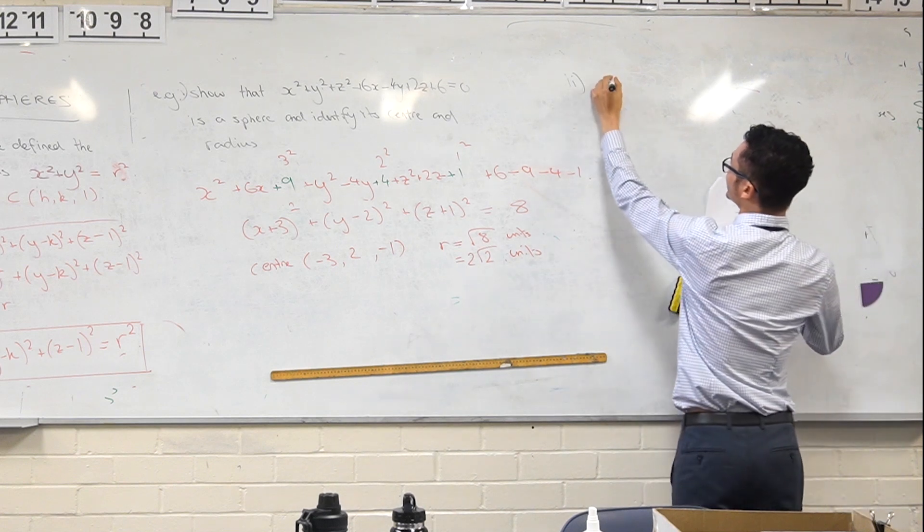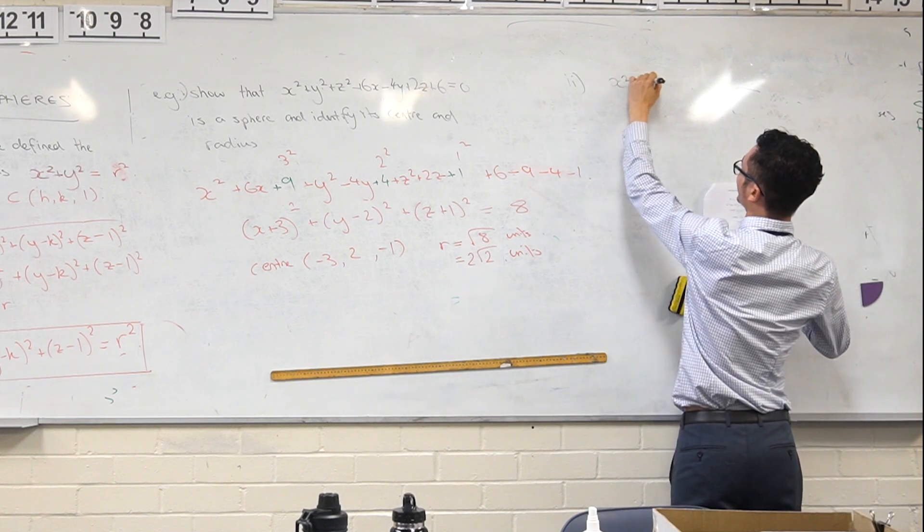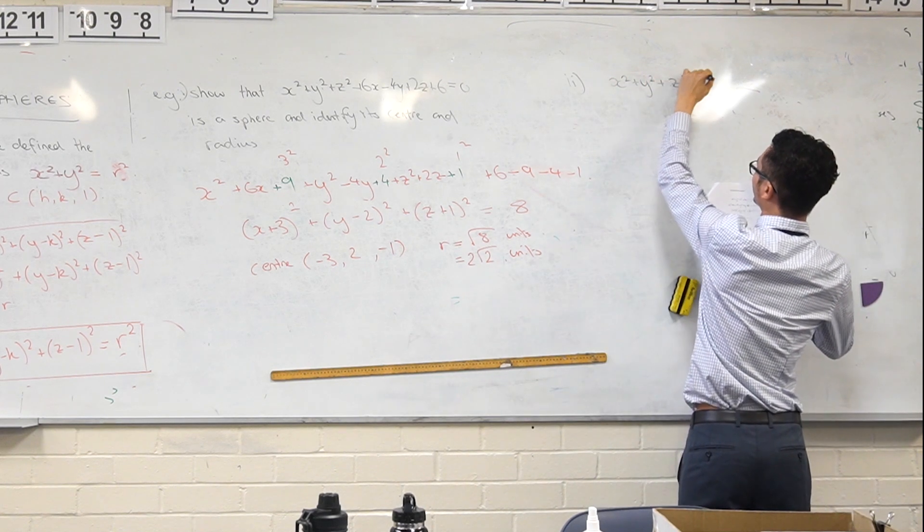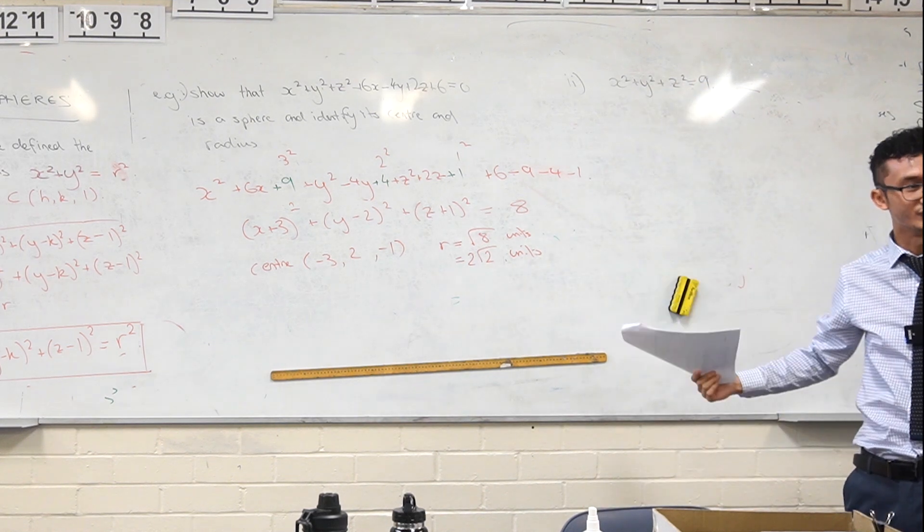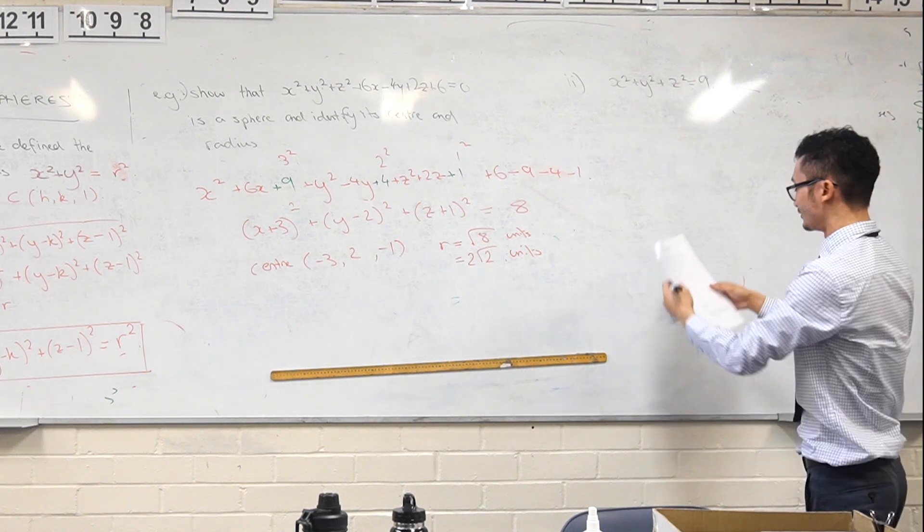Let's take this one: x² + y² + z² = 9. So this guy's got no values here, so center is the origin, radius 3.